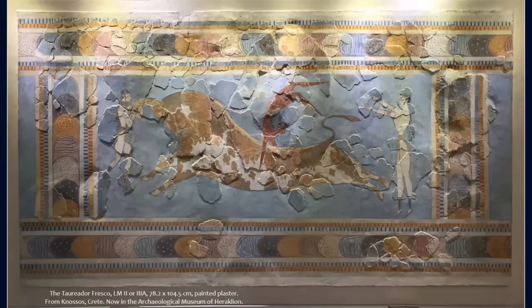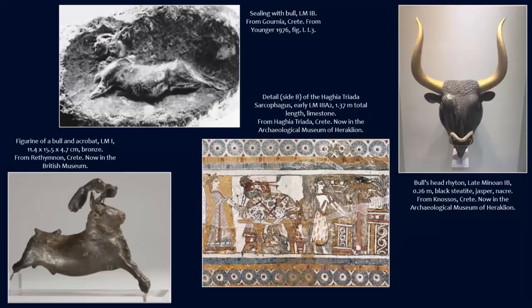The famous Toreador fresco from Knossos is a prime example. The wall painting depicts a bull in flying gallop and three figures in the frame — one seemingly holding the bull's horns, another so-called acrobat flipping over its middle, and a third waiting to assist the acrobat in their dismount. Similar acts of bull leaping are shown in a variety of media, though it is unclear if the activity was a sport, a religious ritual, a coming-of-age ceremony, or pure entertainment. Regardless, the sheer number of bulls depicted in Minoan art attests to their importance in Bronze Age Crete.